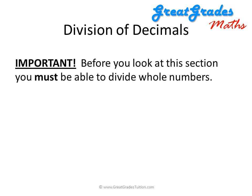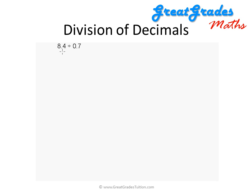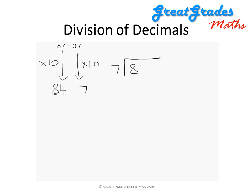Now let's look at division of decimals — you must be able to divide whole numbers first, so if you have difficulty go back to video part 4 to revise division. Let's try 8.4 divided by 0.7. We get rid of the decimal points by multiplying each number by 10: 8.4 becomes 84 and 0.7 becomes 7. Then we divide: 7 into 8 goes once with remainder 1, making the next number 14, and 7 into 14 goes twice. Our final answer is 12.